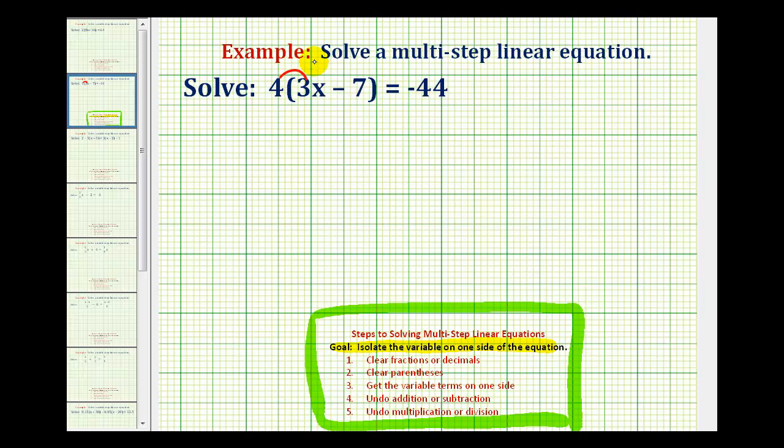So we'll have four times three x minus four times seven equals negative forty-four. Well, four times three x would be twelve x minus four times seven would be twenty-eight. So we have twelve x minus twenty-eight equals negative forty-four.